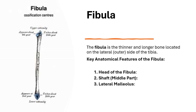Key anatomical features of the fibula: at the proximal end, the head of the fibula is the rounded upper part that articulates with the tibia at the proximal tibiofibular joint. Although this joint does not move much, it helps stabilize the tibia and fibula. The shaft — the middle part — is long and slender, running parallel to the tibia. It provides attachment points for several muscles, including those responsible for movement of the foot and ankle.